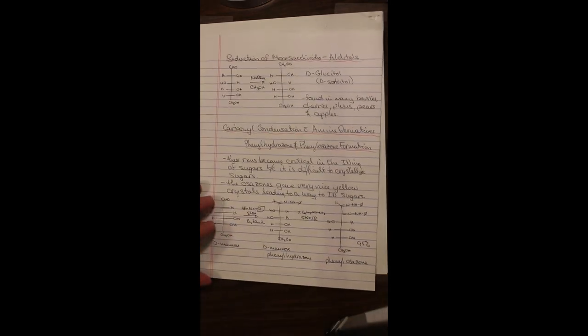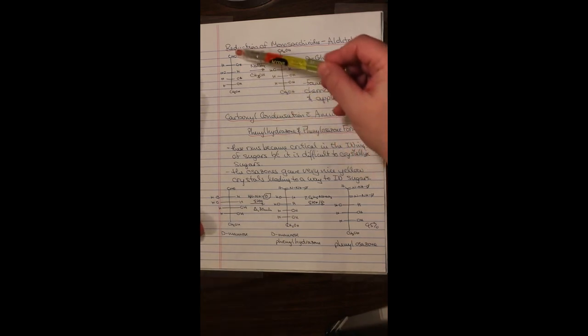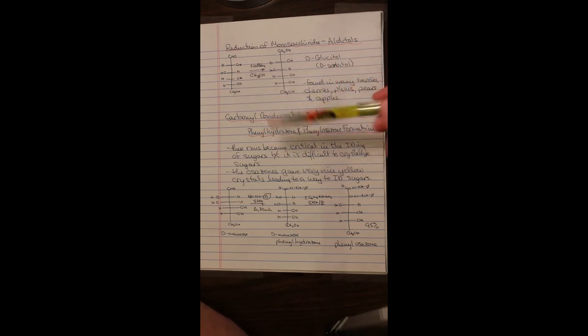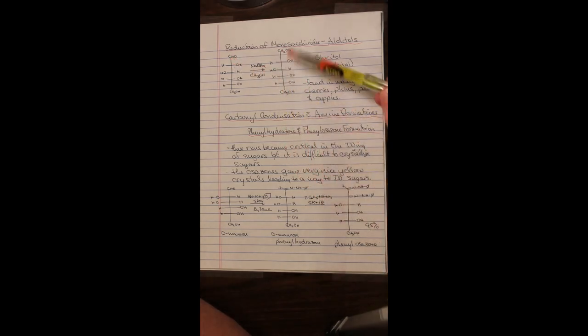Moving on to reduction of monosaccharides, alditols. We're going to take our monosaccharide, an aldose, we're going to treat it with sodium borohydride. That will reduce the carbonyl group to an alcohol. This creates an all-alcohol species. This is referred to as D-glucitol. This was glucose. This is also D-sorbitol. This is actually found in nature in berries, cherries, plums, pears, and apples. But it is really just a reduction of glucose itself.